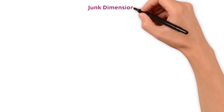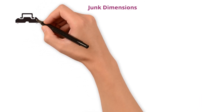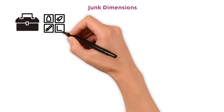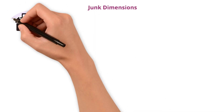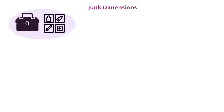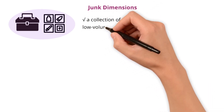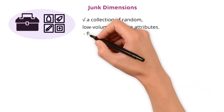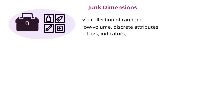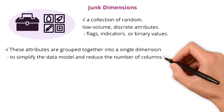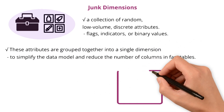Next up: junk dimensions. Think of a junk storage box in your home — a place where various small, seemingly random items are kept so they don't clutter up other storage spaces. Similarly, a junk dimension is a collection of random, low-volume, discrete attributes such as flags, indicators, or binary values that are not part of the main dimensions in a data warehouse. These attributes are grouped together into a single dimension to simplify the data model and reduce the number of columns in fact tables.